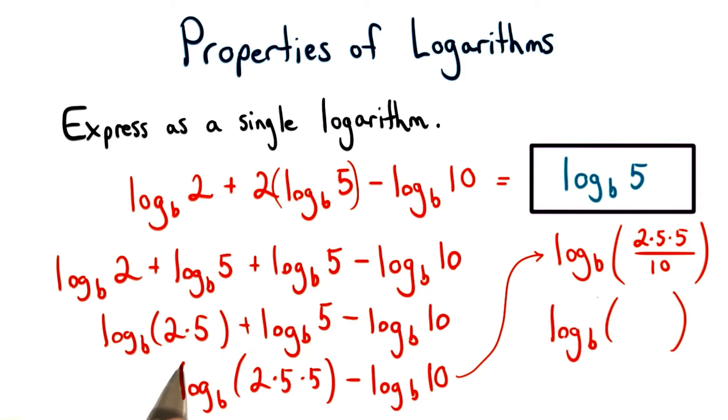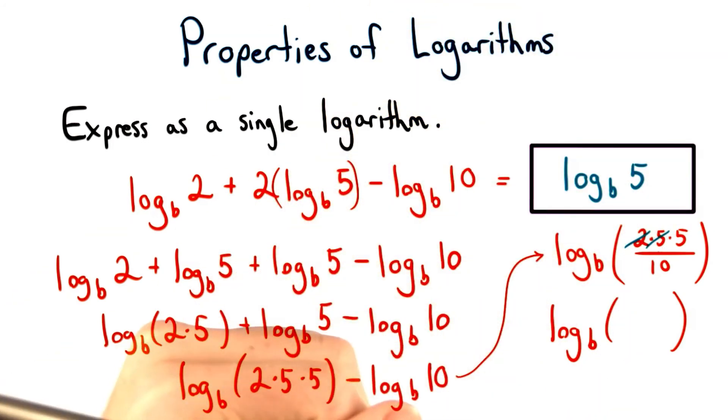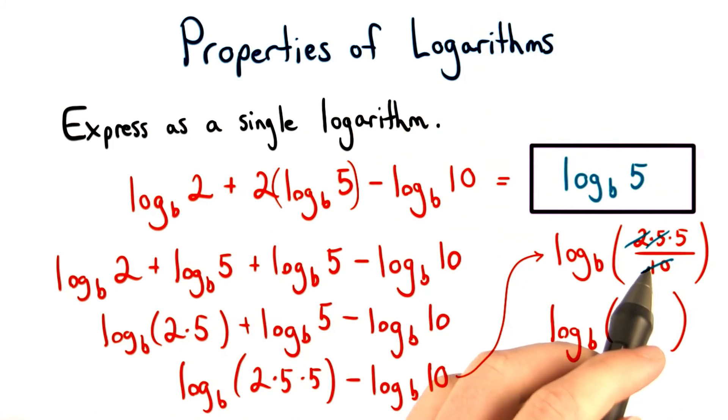Now you might be wondering why I didn't go ahead and multiply these numbers. And it's because I knew that I would have to simplify in the end. So I can just see that 2 times 5 equals 10, and that reduces with another 10 in the denominator. These simplify to 1. And this is how we get our final result of log base b of 5.